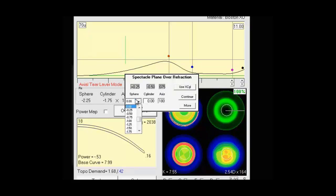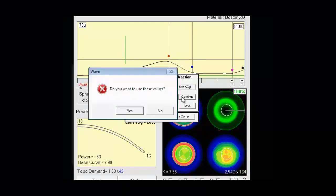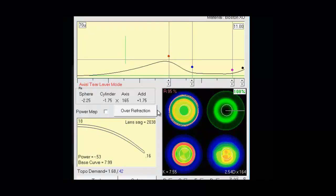If you have an overrefraction to enter you'll do it here. If you want to add prism there's a checkbox to add prism. And if you have subsequent overrefraction you'd enter it in the more box and hit use comp and it enters that up there. I'm going to say no at this point to not use those values as this is just a screen walkthrough.